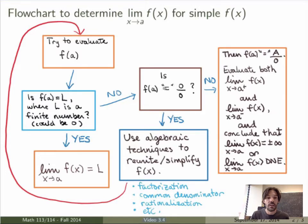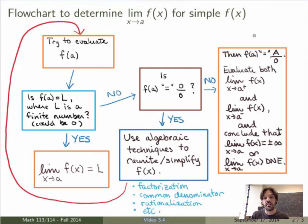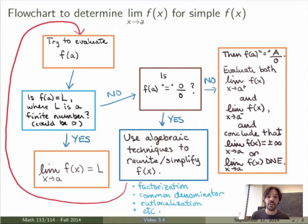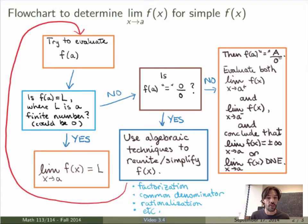Now suppose f(a) is not a finite number but it's also not 0 over 0. It will probably be a over 0 — a finite number over 0. There are other possibilities, like other indeterminate forms such as infinity over infinity or infinity minus infinity, but we'll study those later. For now, ending up with a finite nonzero number over 0 means the limit of the function does not exist as a finite value, but it may be plus or minus infinity — you have a vertical asymptote at x equals a.